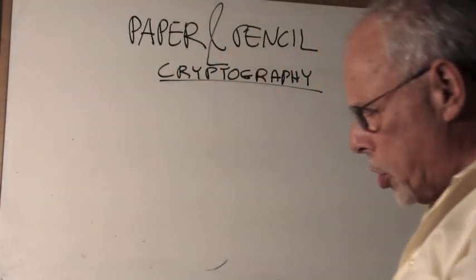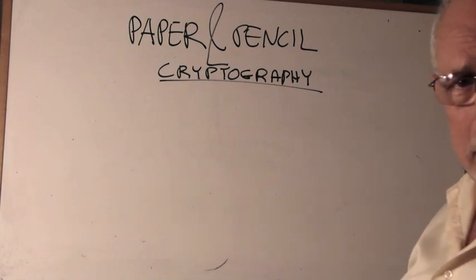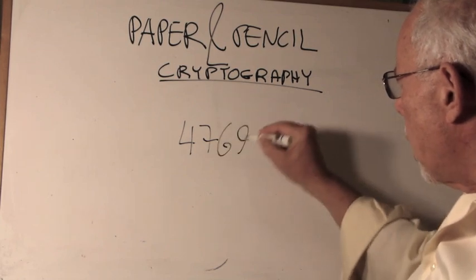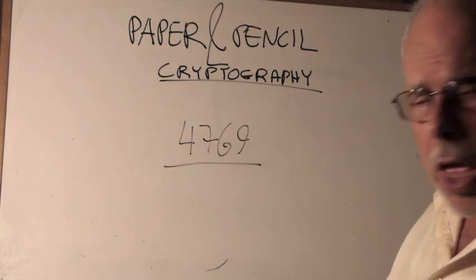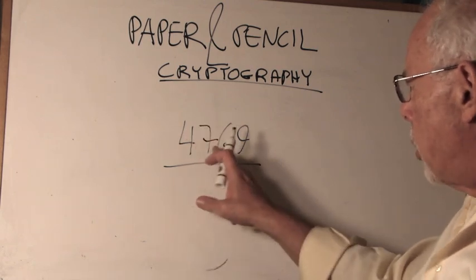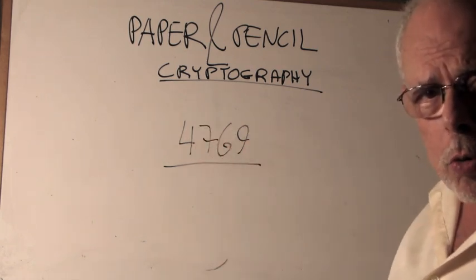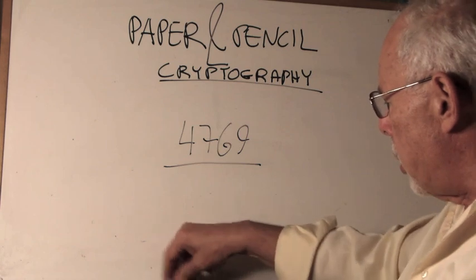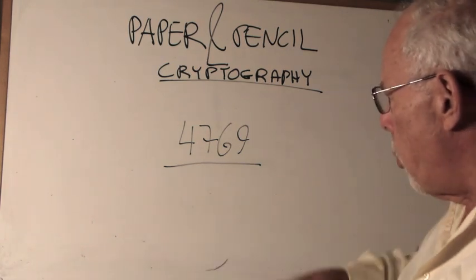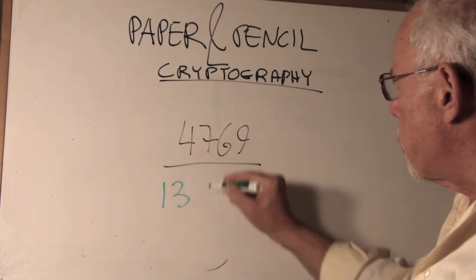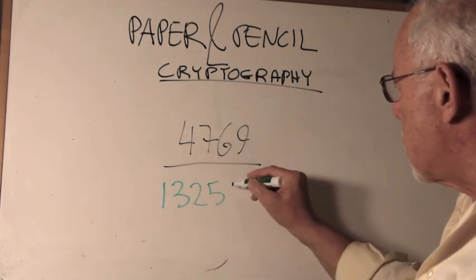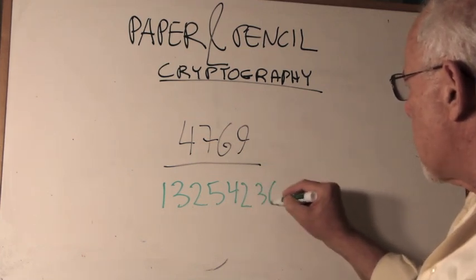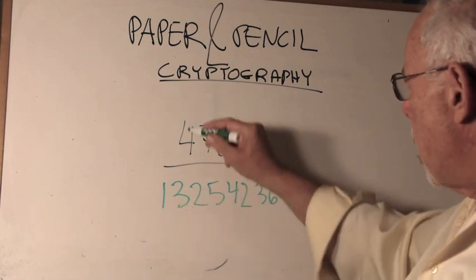So, let's say I want to secure my bank PIN number 4769. That's my PIN. I want to secure it. Now, how about I do the following. I take every digit here and I split it into two that together add up to this digit. So instead of 4, what do I write here? Instead of 4, I write 1, 3. Instead of 7, 2, 5. Instead of 6, 4, 2. Instead of 9, 3, 6.